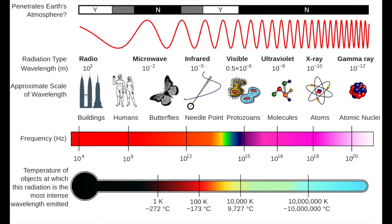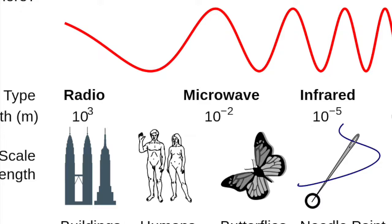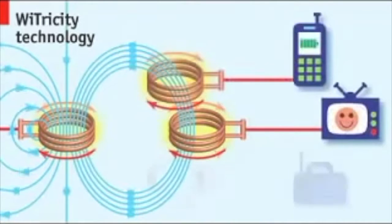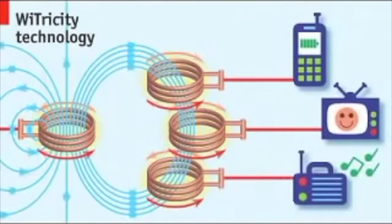Bluetooth transmits information using radio waves of 2.45 gigahertz frequency, which means the frequency of the wave is pretty huge — one of the largest, bigger than humans. All Bluetooth devices have a certain address, a unique ID, within a defined range of addresses that Bluetooth uses.